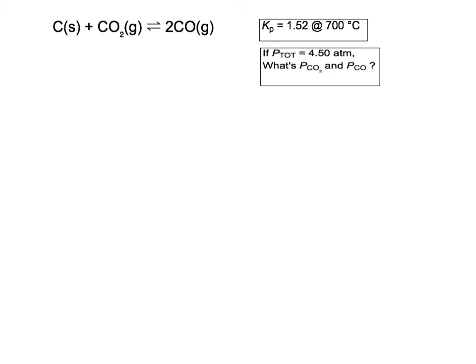So how are we going to do a problem like this? We probably need to start off by writing down the expression for Kp. Kp, just like Kc, is products over reactants, except instead of using concentrations, we use the partial pressures. On the right hand side we've got carbon monoxide, and we're going to square it because there's two of them. On the left hand side we've got carbon, and we also have carbon dioxide.